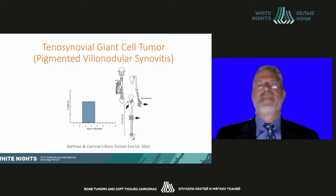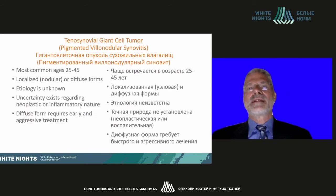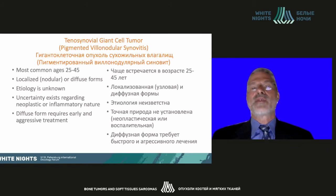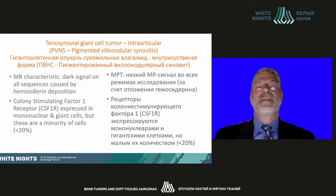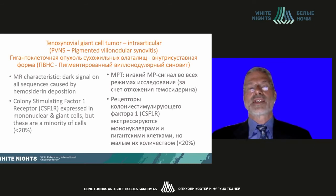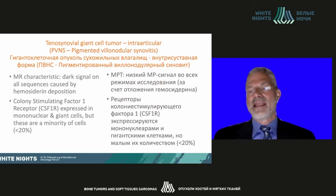Tenosynovial giant cell tumor can cause nerve obstructions. When intraarticular, it can be localized or diffuse forms; the localized form is nodular. The etiology is unknown and uncertainty still exists regarding the neoplastic or inflammatory nature of this lesion. The diffuse form is very difficult to treat and when extensive can require very aggressive treatment. MR characteristics include dark signal on all sequences caused by hemosiderin deposition. Colony stimulating factor 1 receptor, CSF1R, is expressed in mononuclear and giant cells, which are less than 20% of the cell population.